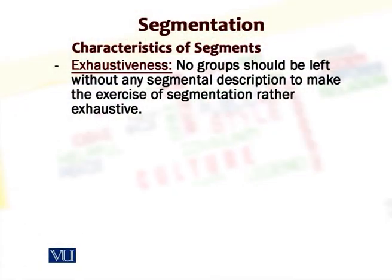The second characteristic of segmentation is exhaustiveness — meaning we've got to undertake an exercise which exhausts the whole market into different well-defined segments, leaving no portion of the market as a group which cannot be classified. So if the total market consists of 100 people, we've got to see to it that all 100 people are divided into different groups. In practicality it is not as arithmetical as that, but the point is that we should not leave any portions of the market as unattended segments — everybody must be accounted for.